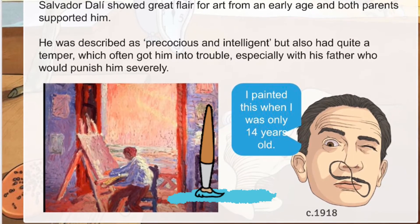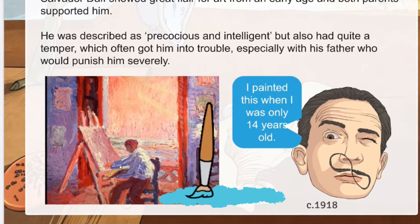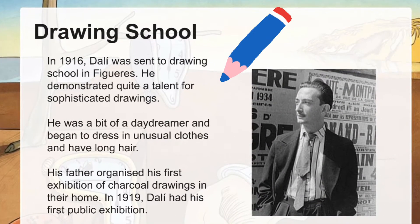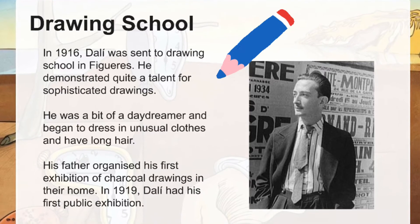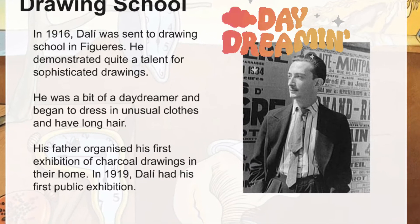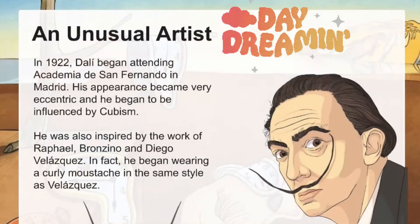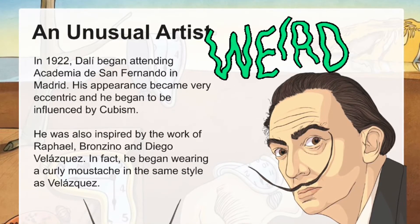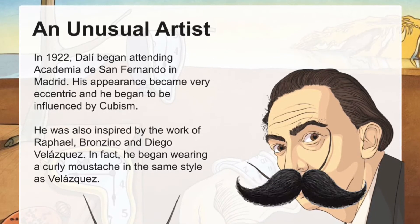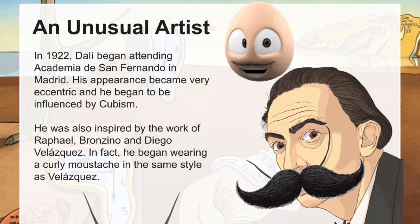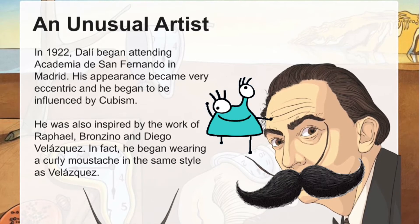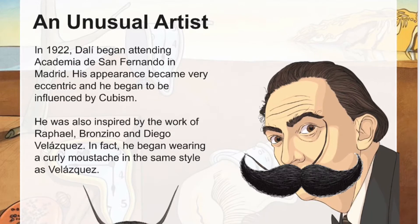This shows one of his earliest paintings that he painted when he was only 14 years old. In 1916, Dali was sent to drawing school in Figueres. He demonstrated quite a talent for sophisticated drawings, but he was also quite a daydreamer and began to dress in unusual clothing and have long hair. In 1922, he began attending the Academy of San Fernando in Madrid, and his appearance became very eccentric. He was very influenced by cubism and also the work of Raphael, Bronzino, and Diego Velasquez. In fact, he began wearing his curly mustache the same way as Velasquez did.